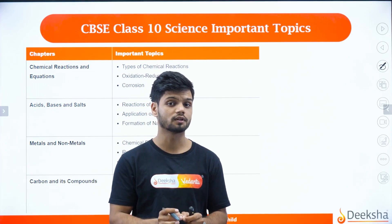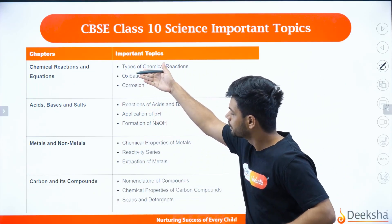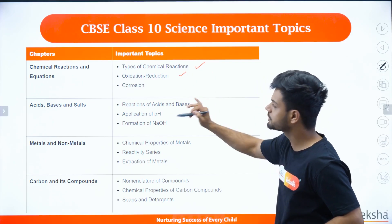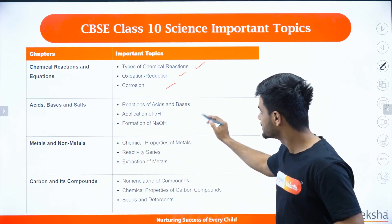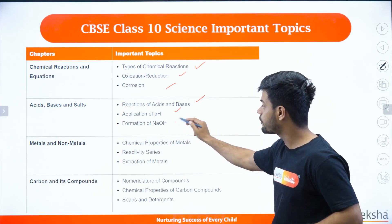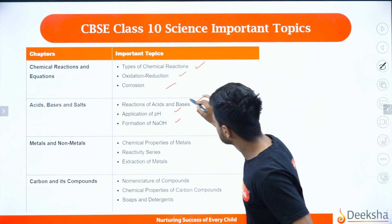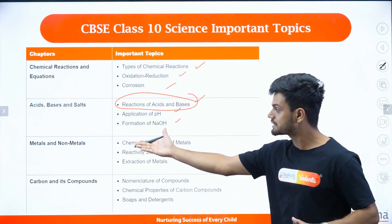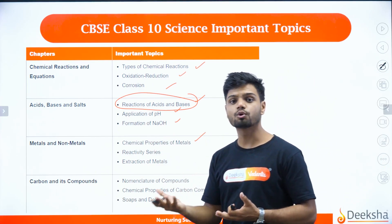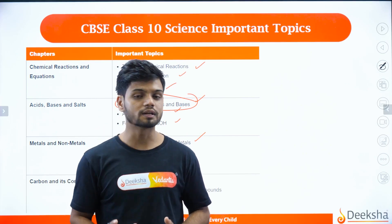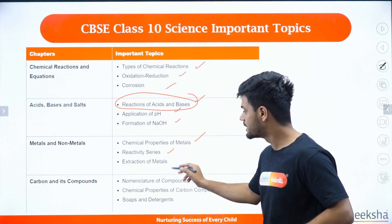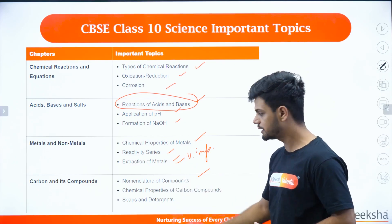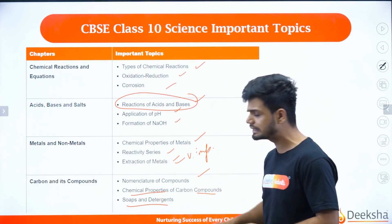I will tell you now what you need to study in each and every chapter. For example, in the case of your chemistry, chemical reactions and equations — all of you need to have mastery over your chemical reactions, oxidation-reduction, and corrosion. Coming to acid-base and salts, that is reactions of acids, applications of pH, and formation of NaOH — very important concept, especially reactions of acids and bases, where direct questions will come. Then looking at metals and non-metals, we have the properties of metals — malleable, ductile — all that is very important. Then we have reactivity series and extraction of metals, very important concepts.